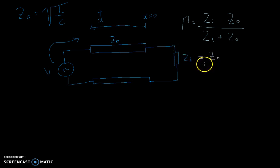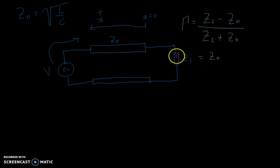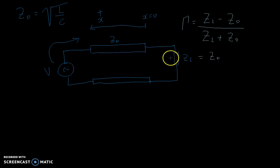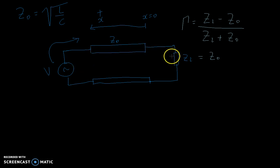So ZL equal to Z0 is the optimal value of resistor that you can put on the line if you don't want any reflections — we have matched the characteristic impedance of the line. If you're using digital signals, you definitely do not want reflections that will interfere with timing and everything.